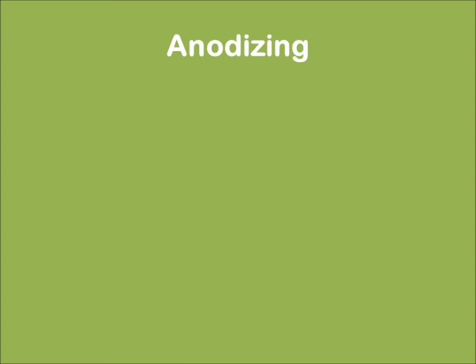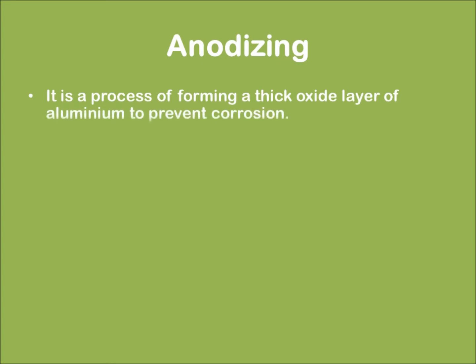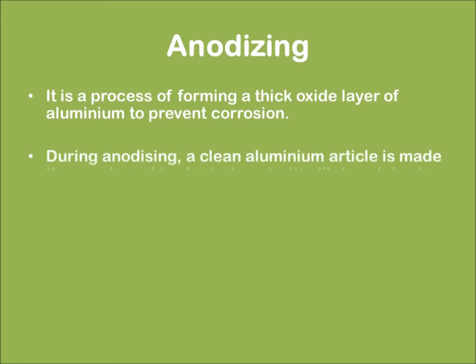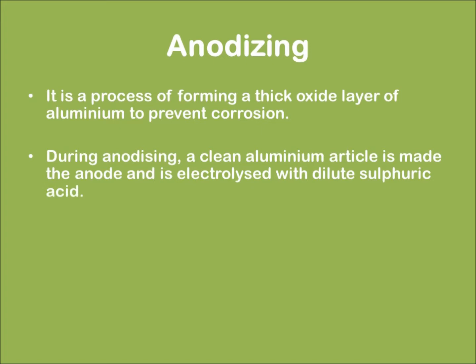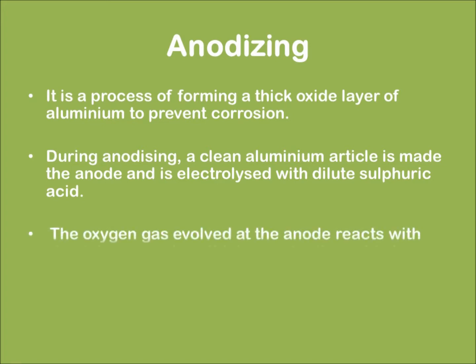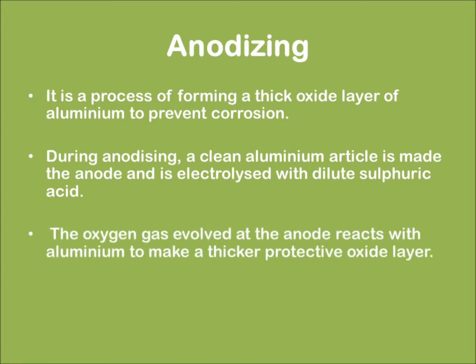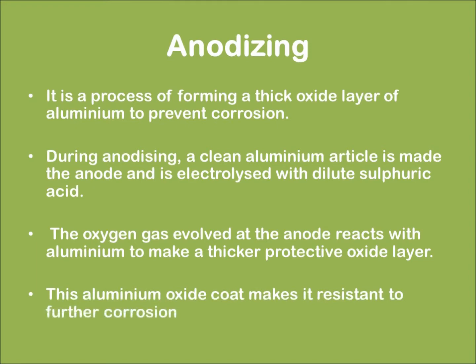Now let us learn about anodizing. It is the process of forming a thick oxide layer of aluminium to prevent corrosion. During anodizing, a clean aluminium piece is made the anode and is electrolyzed with dilute sulfuric acid. The oxygen gas evolved at the anode reacts with the aluminium to make a thicker layer of aluminium oxide, making it resistant to corrosion.